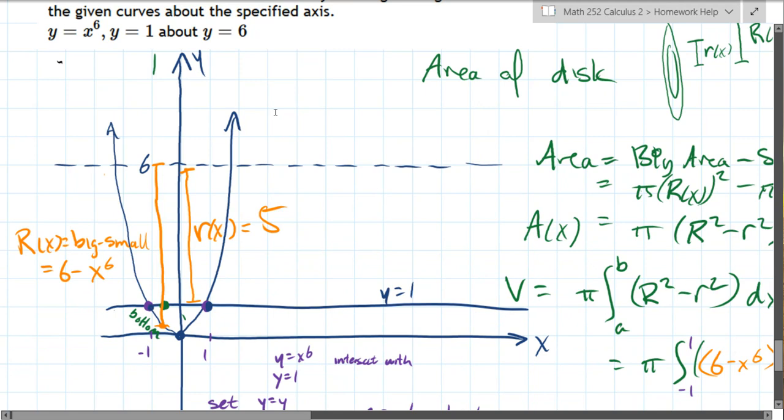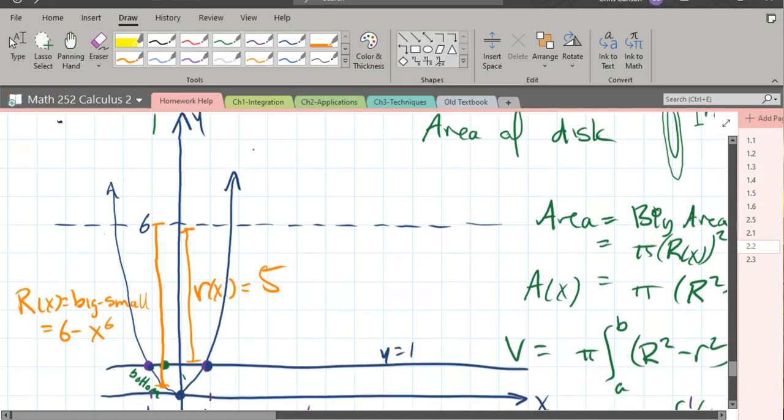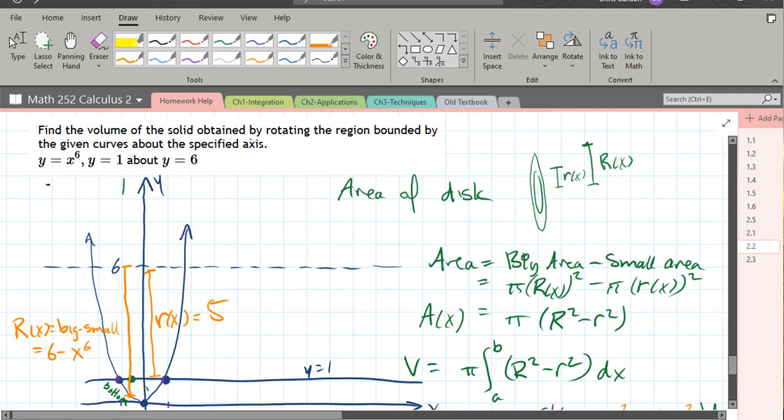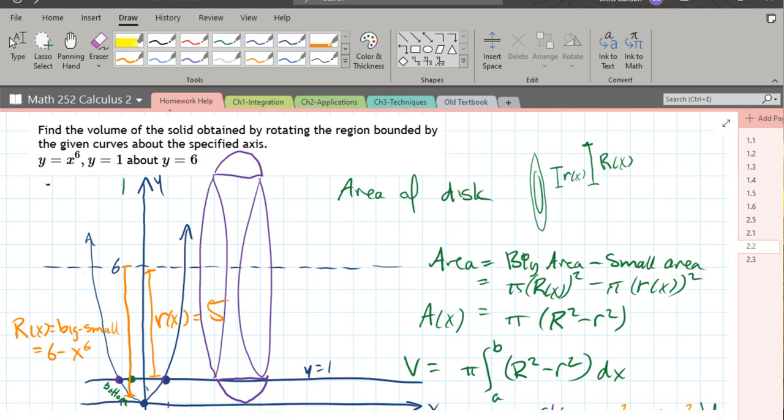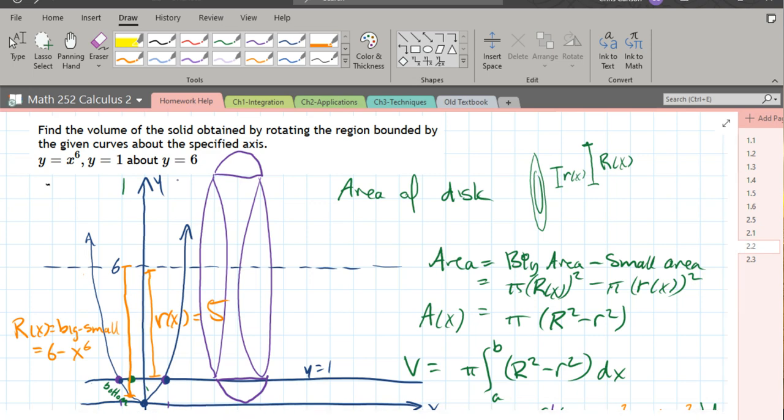All right, now, first thing you notice is this, when we rotate this around, let's get a new color. Get purple, all right. When we rotate this region around, what's gonna happen, let me redraw it right here. So it's gonna get rotated around. When it's all the way at the top, it's gonna look like this. And then in between, not the best drawing ever. It's actually gonna be hollow in the middle. So it's going to only have this kind of volume at the edges, it's gonna be hollow in the middle. And so we have to be a little bit more careful on this one.